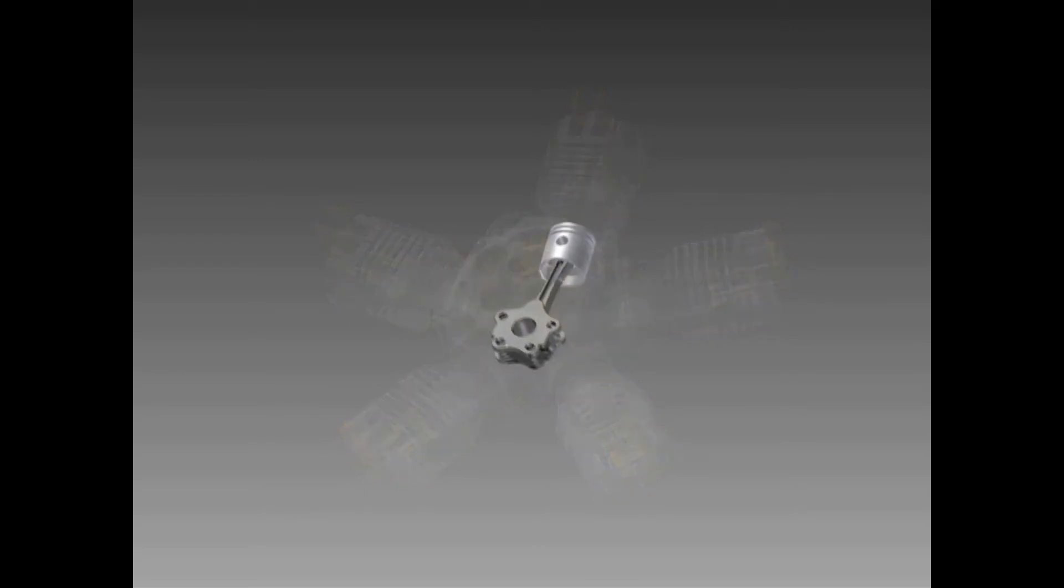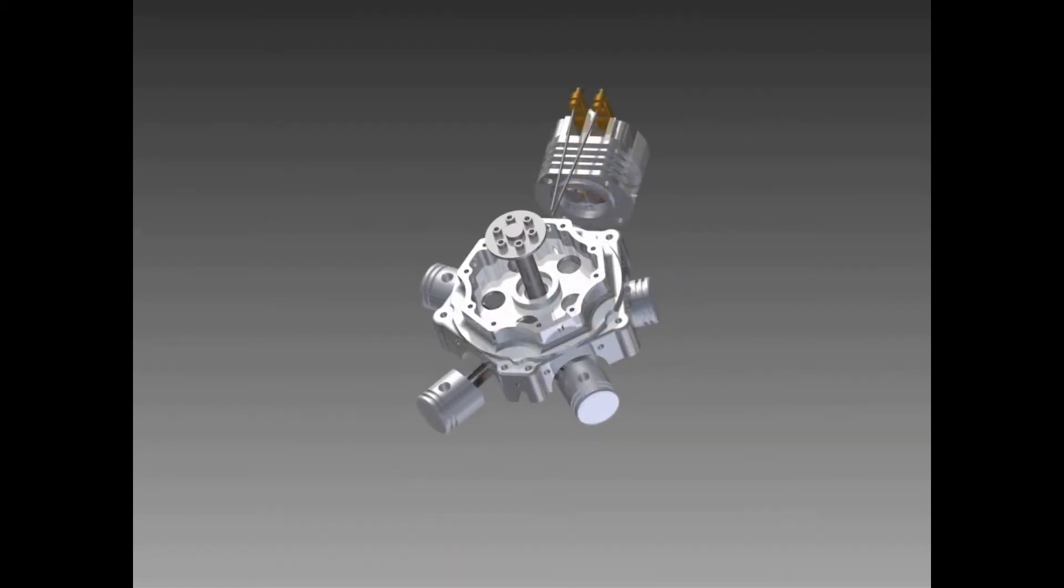The heart of a radial engine is the master connecting rod. It not only connects the number one piston, which is usually straight up, but it also has connections near the crankshaft for the other rods, which are called articulating rods.